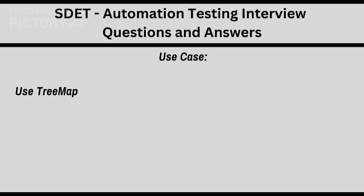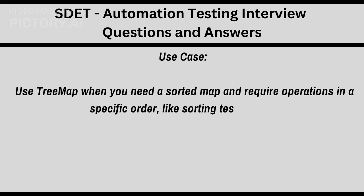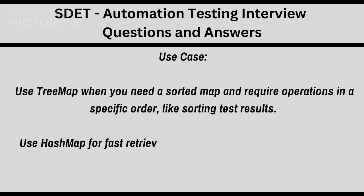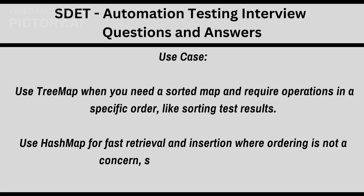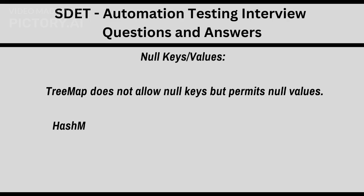Use case: use TreeMap when you need a sorted map and require operations in a specific order, like sorting test results. Use HashMap for fast retrieval and insertion where ordering is not a concern, such as storing test data. NullKeys: TreeMap does not allow null keys but permits null values. HashMap allows one null key and multiple null values.